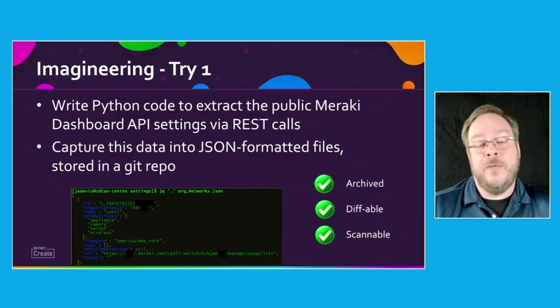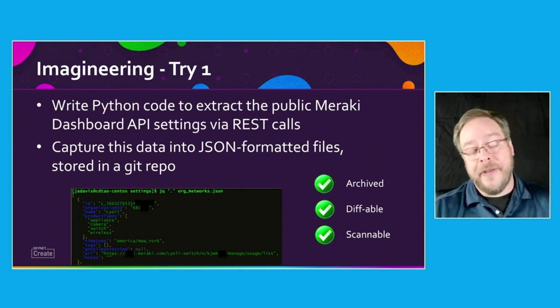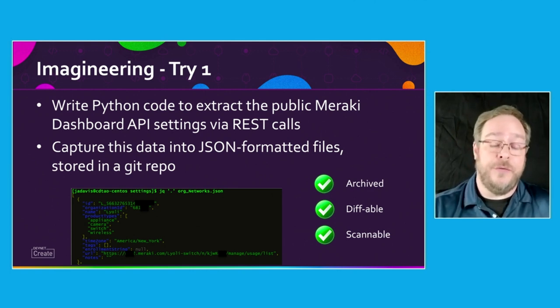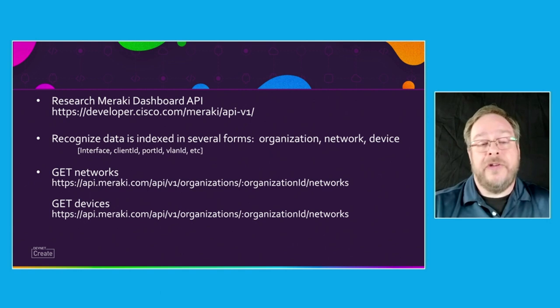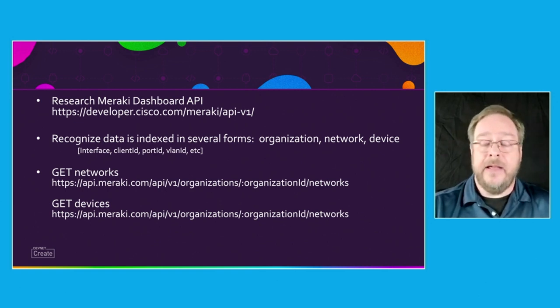We take that JSON data and put it in a Git repo. Now we've got this information archived, it's diffable, and it's scannable. So we can start to do some of those things that check for certain policies and rules that we've defined. The API is really well documented. One thing to note is that it's very hierarchical and indexed on organization ID, network ID, and device ID — those are the three primary indices. You may also get into other ones around interface, client IDs, port, or VLANs, so you might have to add additional code to handle that logic and create loops.